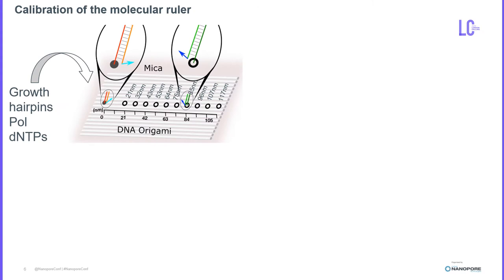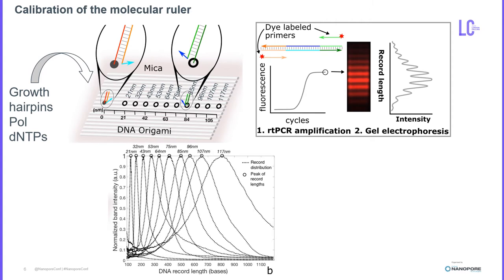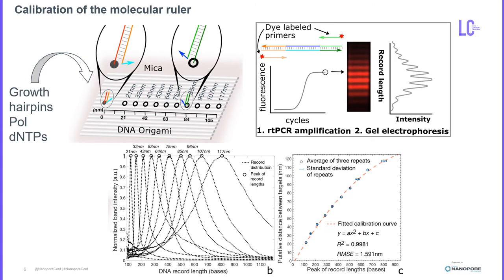First, we calibrated the ruler on a DNA origami, which is a very well characterized nanoscale breadboard. Molecular ruler recordings were made on known distance targets. Records were collected, amplified by PCR, and run on a gel. The peak of the distance records were plotted and fit to give a calibration function.